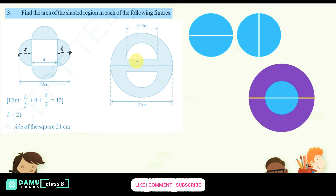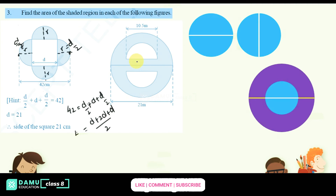These are all radii. The 42 cm total is made up of d by 2 plus d plus d by 2. Taking the LCM gives us d plus 2d plus d over 2, equal to 42. So 42 into 2 equals 84, and d equals 42 into 2 by 4.